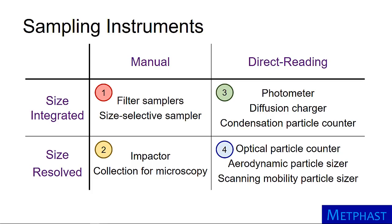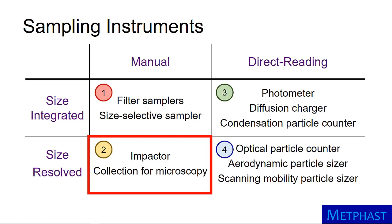There are many different categories of sampling instruments. They include instruments that are manual or direct reading, and those that are size-integrated or size-resolved. Here we will focus on manual, size-resolved instruments. This category includes impactors and samplers designed to collect particles for microscopy.